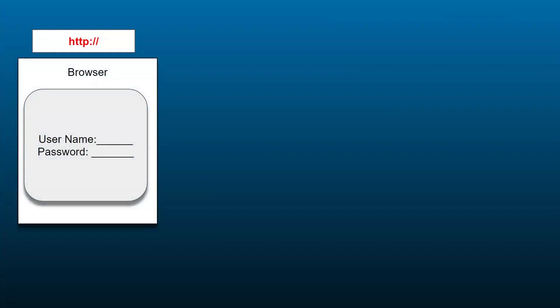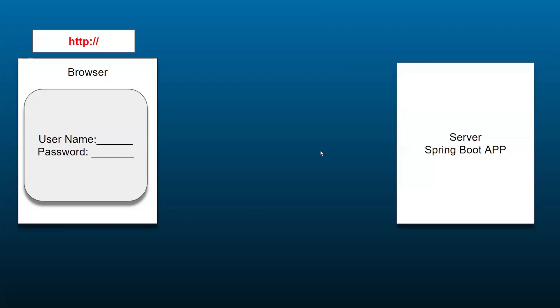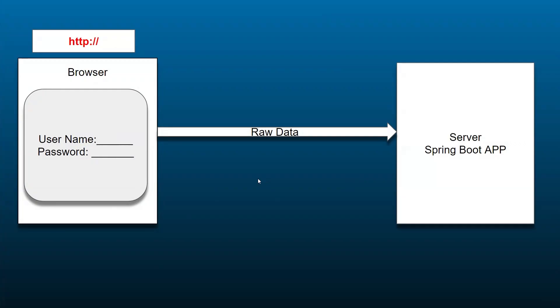Let's see the flow of an HTTP request. Let's say we have a browser and we are logging into a website. We put in the username and password, and when we click the login button it connects with the server through the HTTP request. When it passes that data — like username and password — to the server, this data is in the form of raw data.